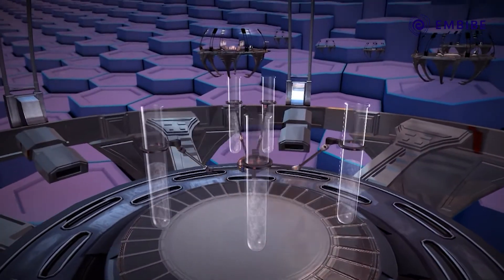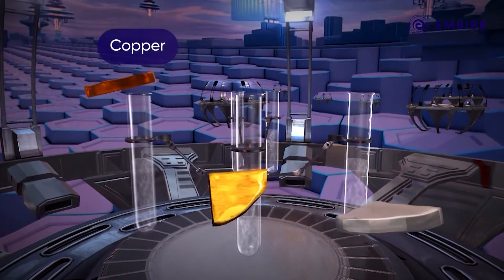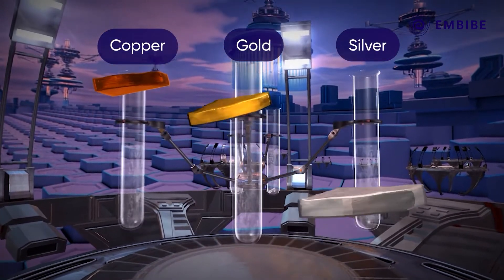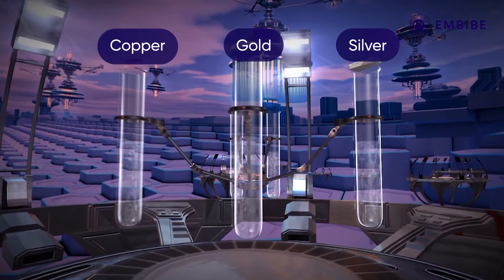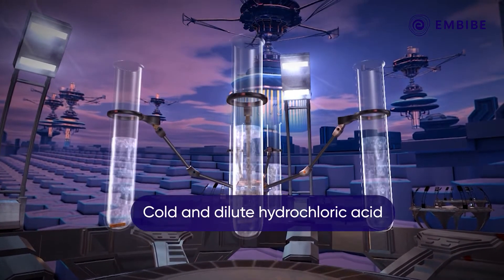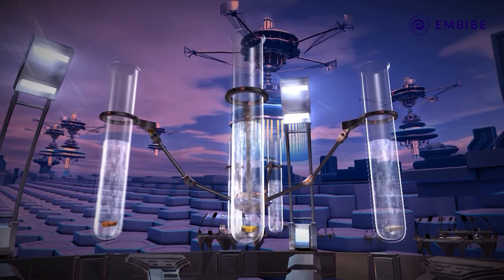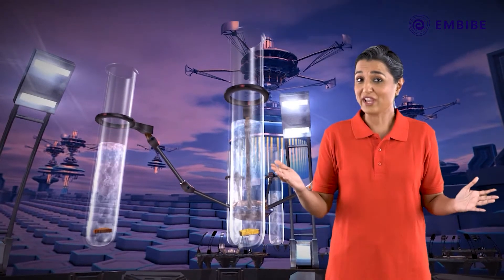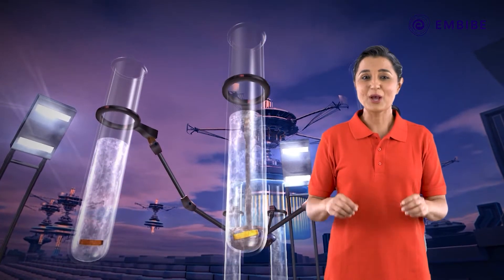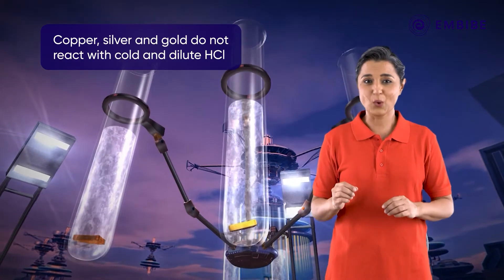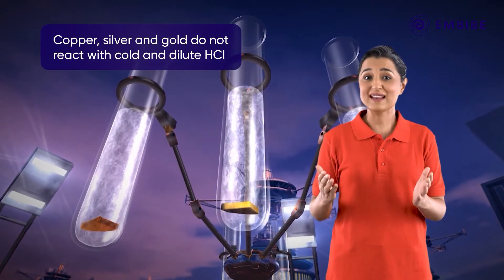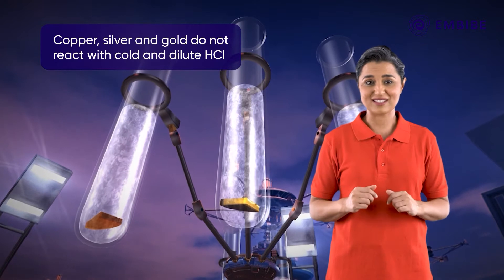Now drop a piece of copper, gold and silver into three other test tubes filled with cold dilute HCl. No change is observed. This implies copper, silver and gold do not react with cold dilute HCl.